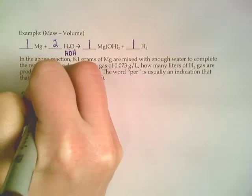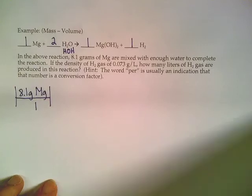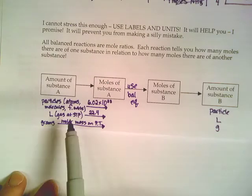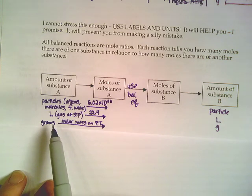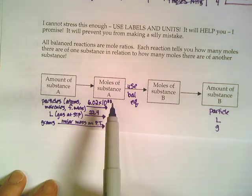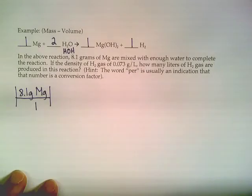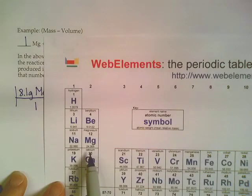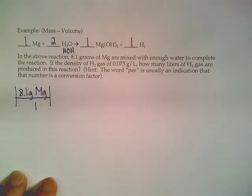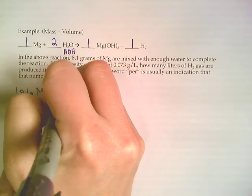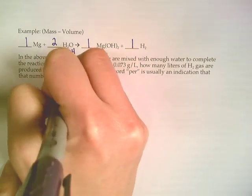So our stoic flow chart tells us we have to get everything into moles. So we're going to take our grams of magnesium and get that into moles of magnesium using the molar mass on the periodic table. So if you take a peek on the periodic table and find magnesium, the molar mass is about 24.3 grams per mole, so I'll put that 24.3 on the bottom and one mole on the top.